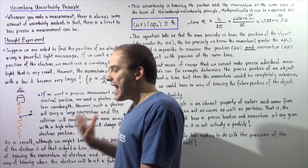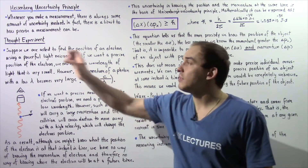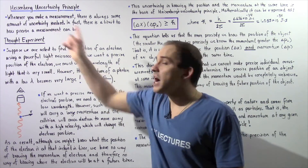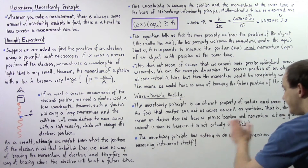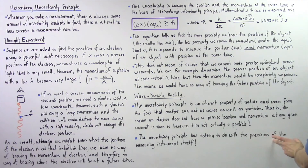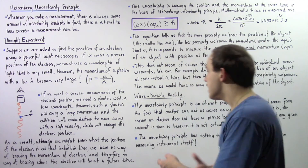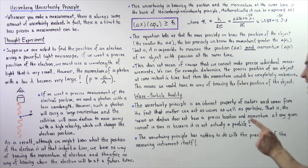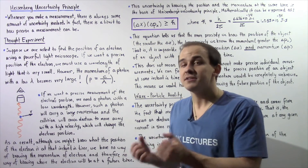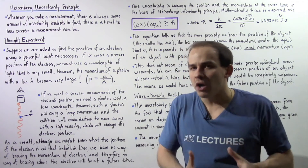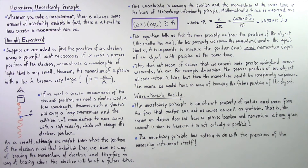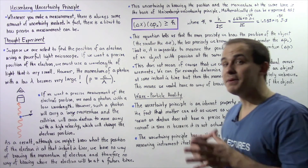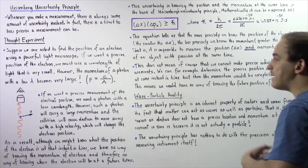Once again, we have to emphasize this important point about the Heisenberg Uncertainty Principle: it has absolutely nothing to do with the precision of the measuring instrument that we are using. The Heisenberg Uncertainty Principle is an inherent property of nature and comes from the fact that matter on a subatomic level can act as particles as well as waves. The reason an electron does not have a precise location and momentum at any given moment in time is because our electron is not actually a particle.